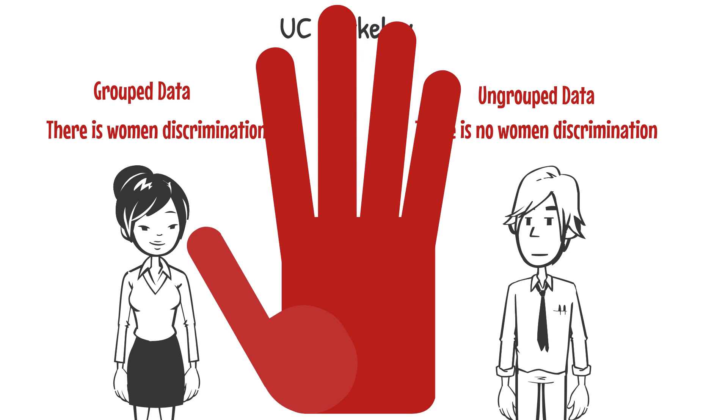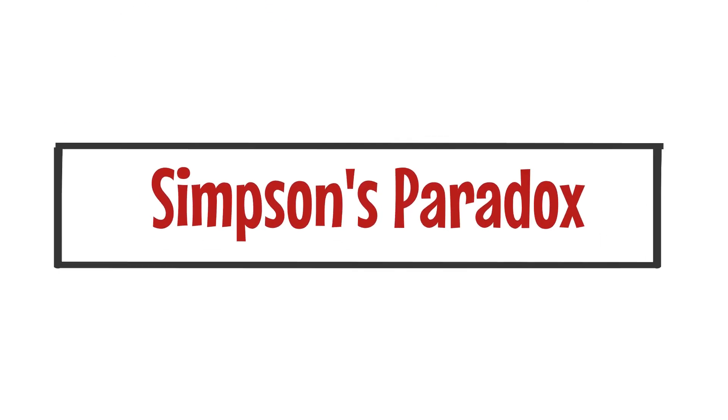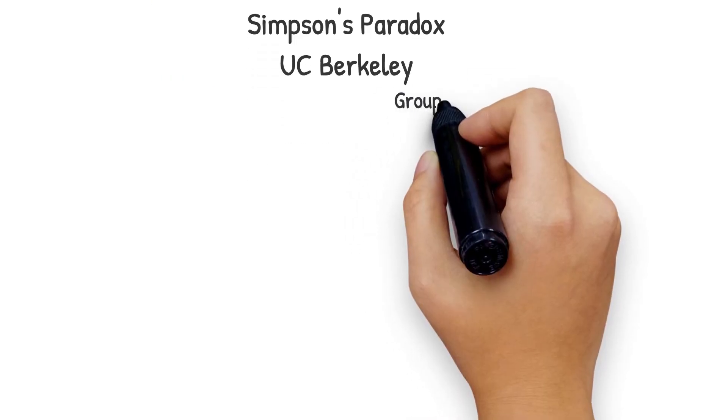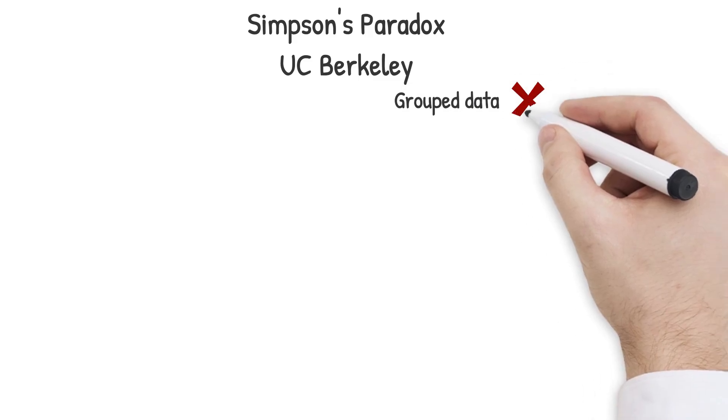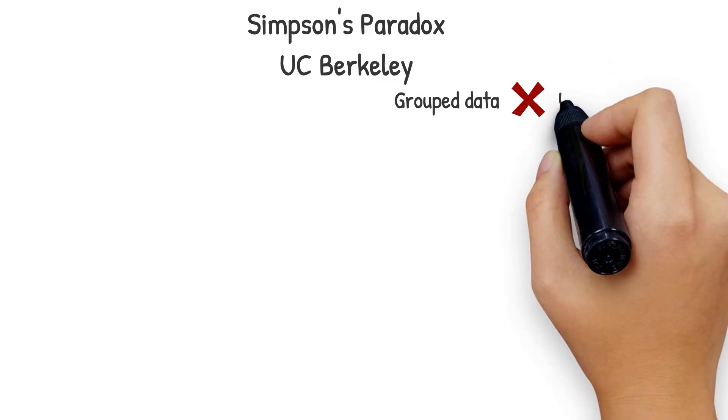Ladies and gentlemen, welcome to Simpson's Paradox. Simpson's Paradox is a mathematical effect that occurs when the grouped data is telling an opposite story of the ungrouped data.